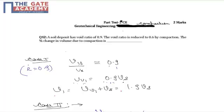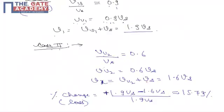So total volume comes out as 1.9 Vs. And in case 2, volume of voids comes out as 1.6 Vs by same method that we adopted in case 1, that is volume of voids in case 2 upon volume of solids.